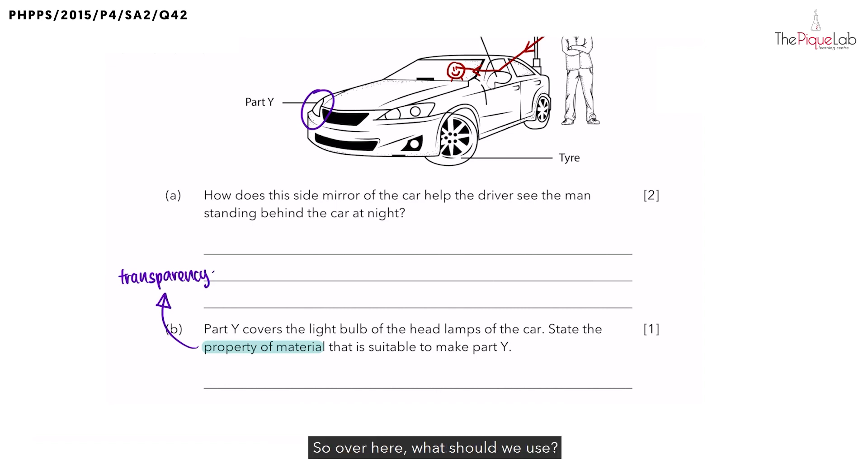So over here, what should we use? We should use a material that allows most light to pass through. So since we need to use a material that allows most light to pass through, would we choose a transparent, translucent, or opaque material for part Y? We would choose a transparent material so that most light from the lamp is able to pass through part Y to allow the driver to see the objects in the surrounding the most clearly. So that's your answer for part B.